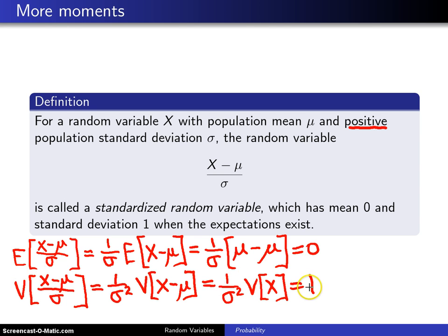So since the population variance is 1, the population standard deviation is also 1, and those are two quick proofs of why this standardized random variable has mean 0 and standard deviation 1.